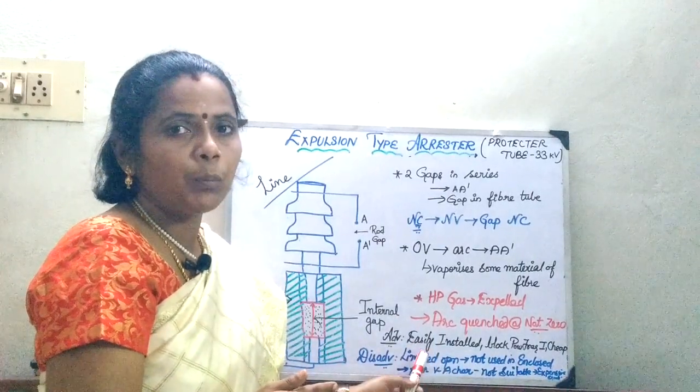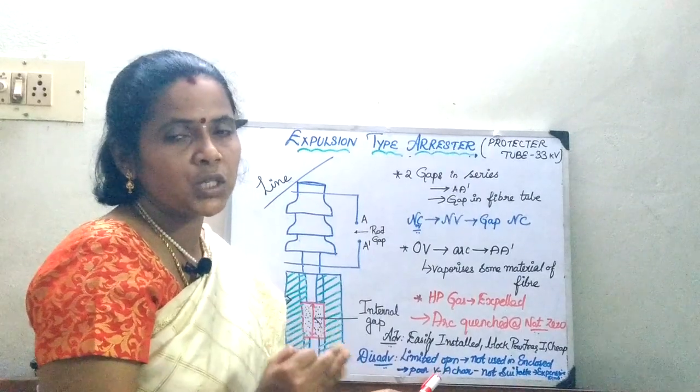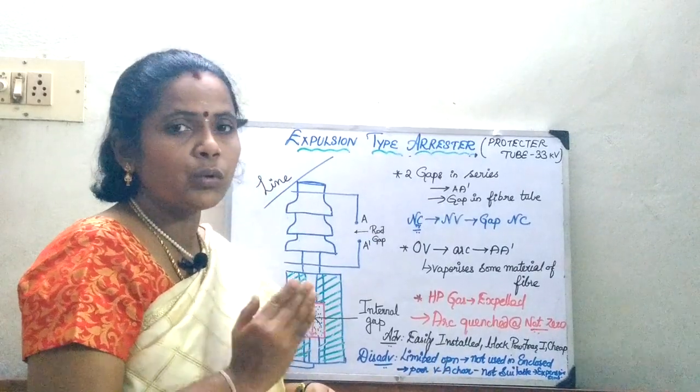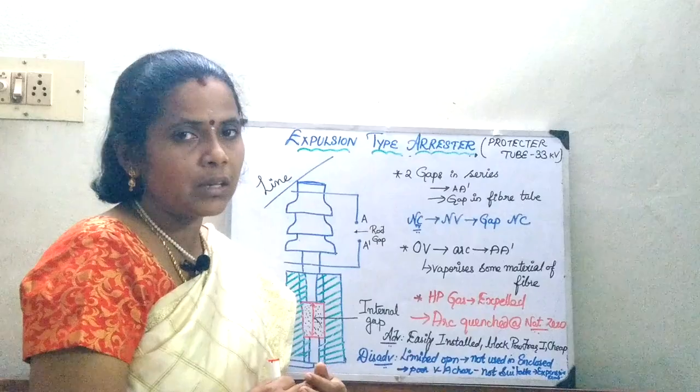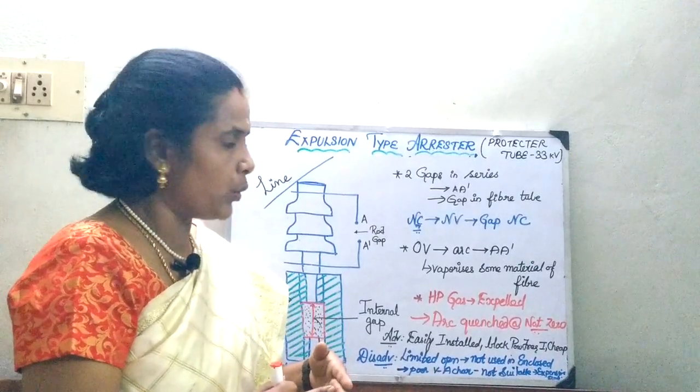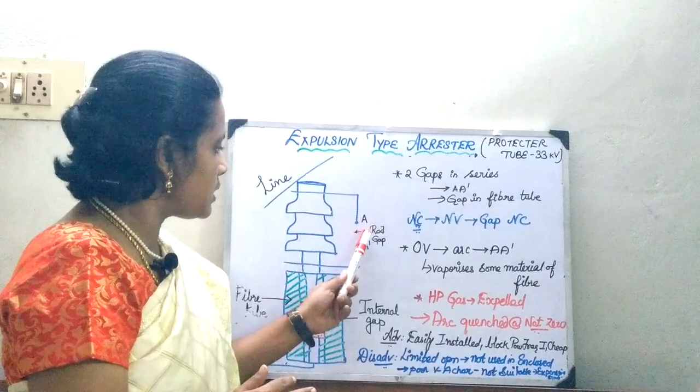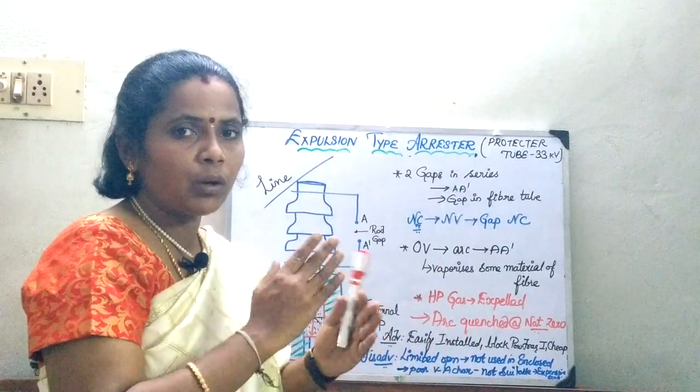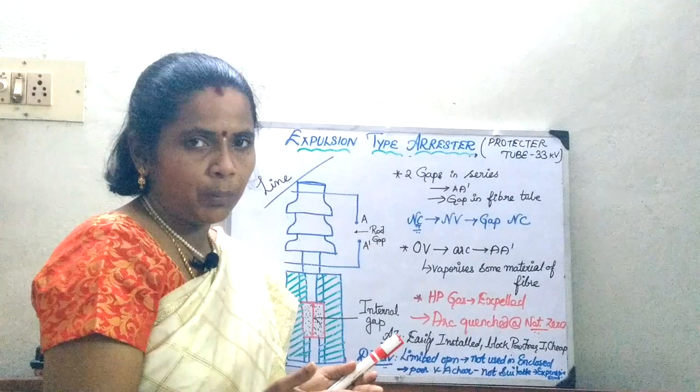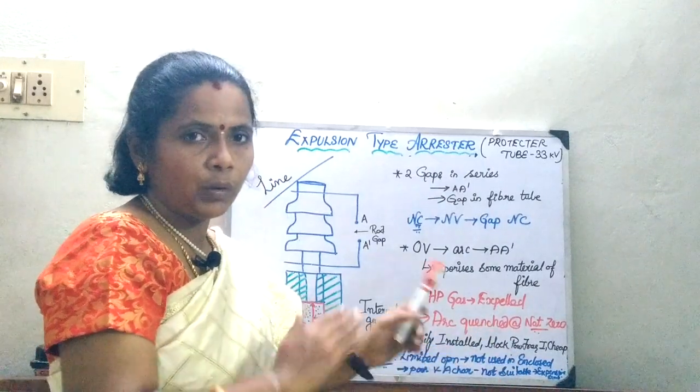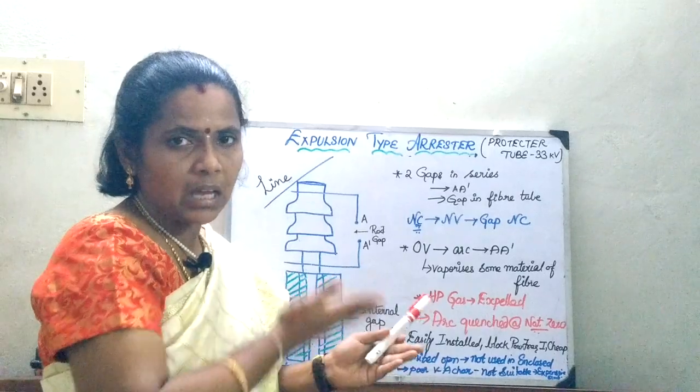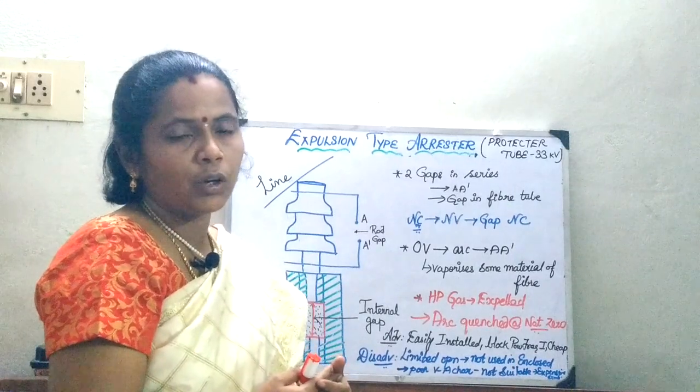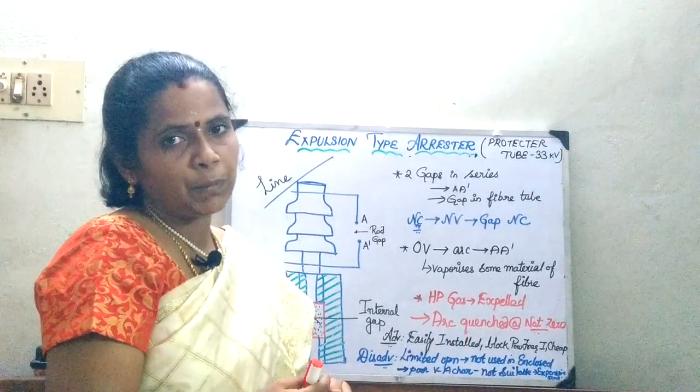The next thing is, it is having poor volt-ampere characteristics, which is the essential thing of a lightning arrestor. So, because of this poor volt-ampere characteristics, you cannot use it for protection against expensive equipment. The only advantage is you are going to have two sparks in series, so the arc will be quenched at a faster rate. But the disadvantage is that you cannot use it in enclosed equipment places because high gases will be expelled out, and due to its poor volt-ampere conditions, it cannot be used for the protection against expensive equipment.